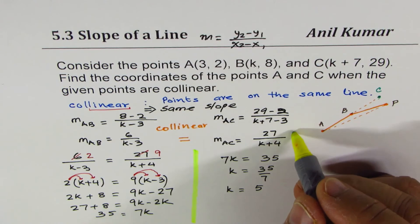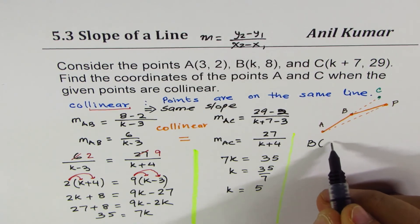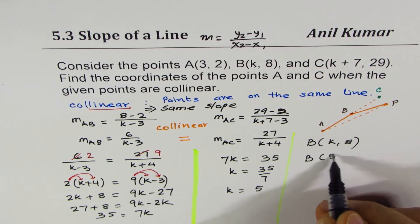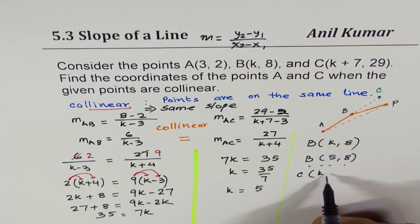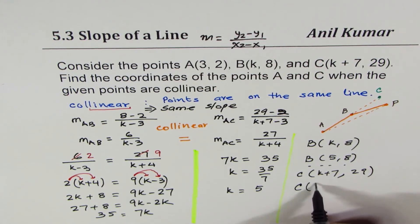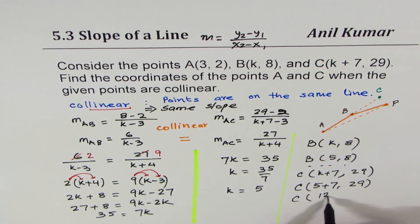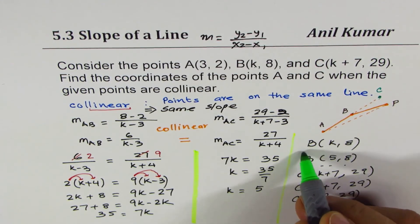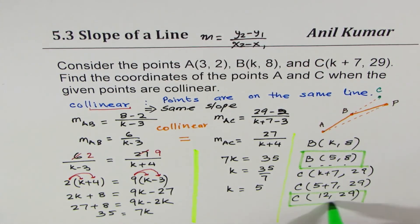Once you find the value of K, you can find both the points. B is K, 8. K is 5 and therefore, point B is (5, 8). C is K plus 7, 29. C could be written as 5 plus 7, 29. C is 5 plus 7 is 12, 29. These are the coordinates of our points. For point B, the coordinate point is (5, 8) and point C is (12, 29).